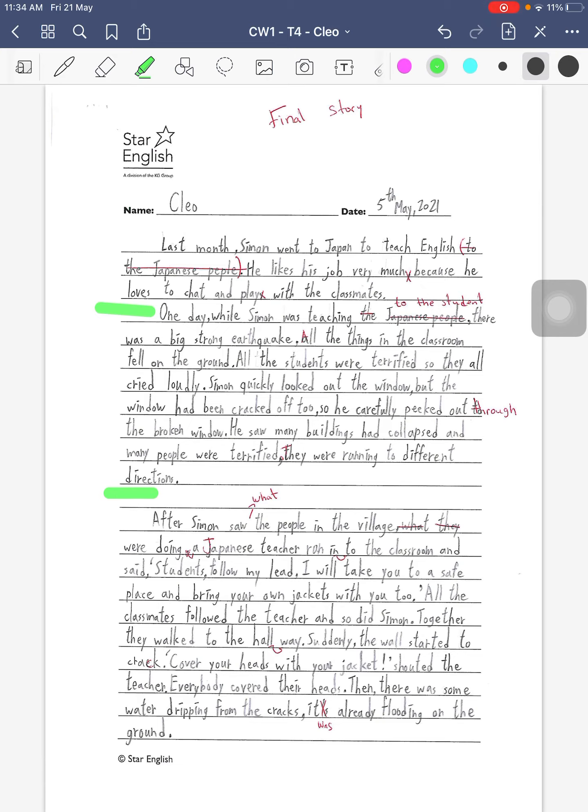Now some things that we have to be careful of: over here, someone went to Japan to teach English to the Japanese people. You actually don't need this 'to Japanese people' part. It's already implied that he went to Japan for that. Simon was teaching to the students. It's better just to specify what type of people, like to the students or to the teachers or to a certain group.